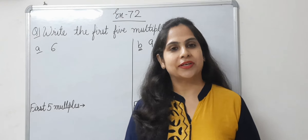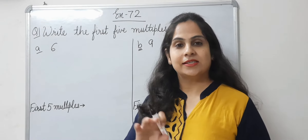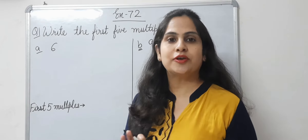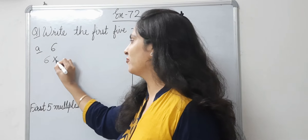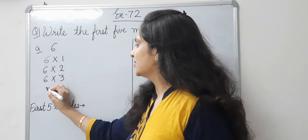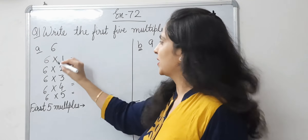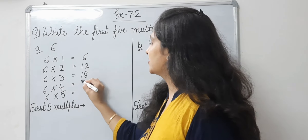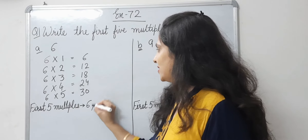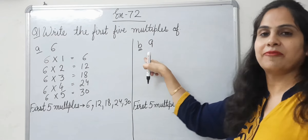Now let's start Exercise 7.2. Question 1: write the first 5 multiples of 6. This is a very easy exercise — you just need to know the tables. Multiply 6 by 1, 2, 3, 4, and 5. 6 1s are 6, 6 2s are 12, 6 3s are 18, 6 4s are 24, 6 5s are 30. So our first 5 multiples of 6 are: 6, 12, 18, 24, and 30.